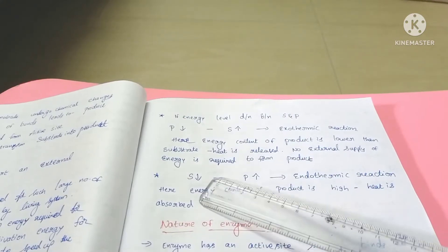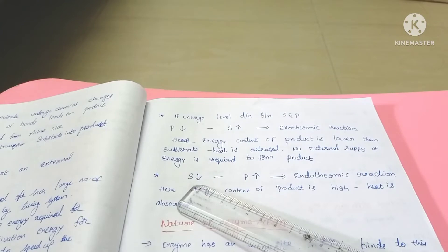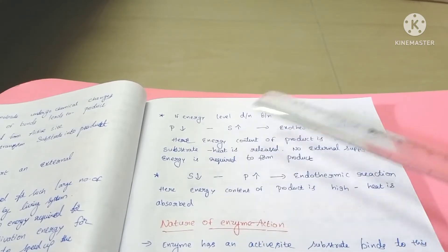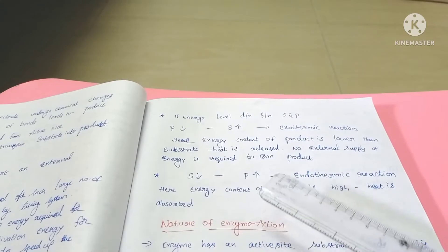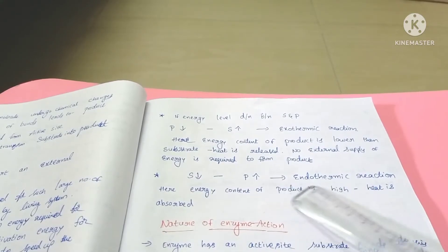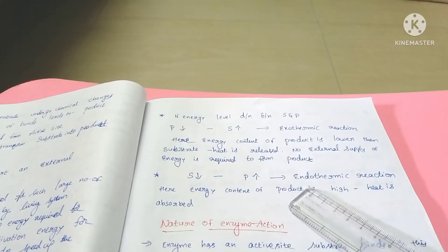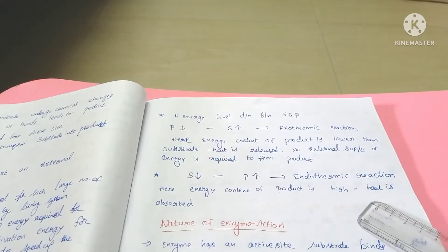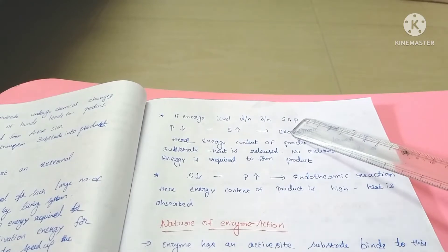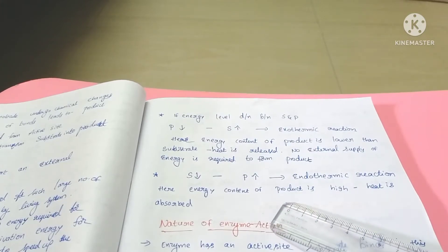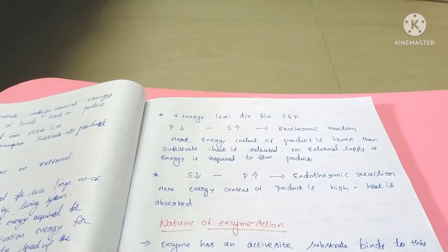In another case, the energy content of the substrate is low compared to the energy content of the product, which has a high energy level. This type of reaction is called an endothermic reaction. Endo means inside, thermic means heat — here the heat is absorbed inside. In exothermic reactions heat is liberated, whereas in endothermic reactions heat is absorbed. The energy content of the product is high and heat gets absorbed — this is called an endothermic reaction.